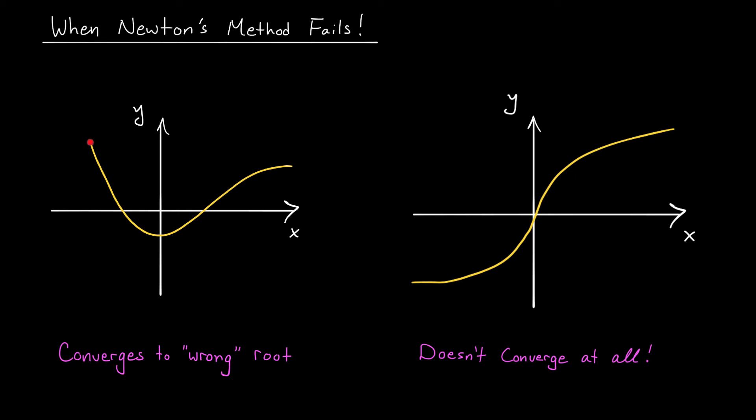So first, consider the situation on the left. Suppose that this is my function in yellow, and I'm trying to approximate this root here in pink. I begin with an initial guess, x0, maybe that's somewhere over here, and then I carry out Newton's method. I find the equation of the tangent line to my function at x0, might look something like this, and I let x1 be the point where it crosses the x-axis. Now I do the same thing again. I look at the tangent line at x1, might look something like this, and I let x2 be the point where it crosses the x-axis.